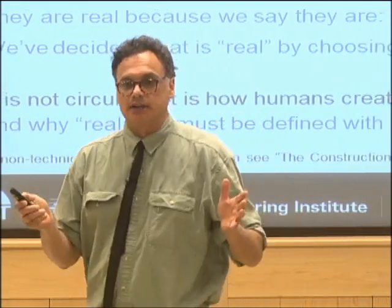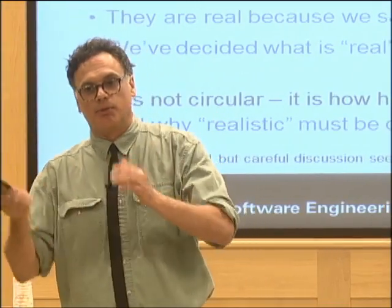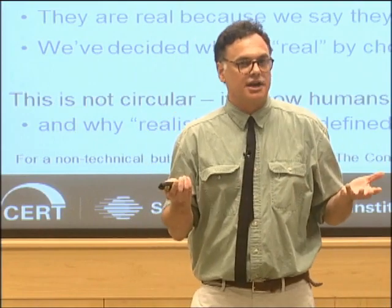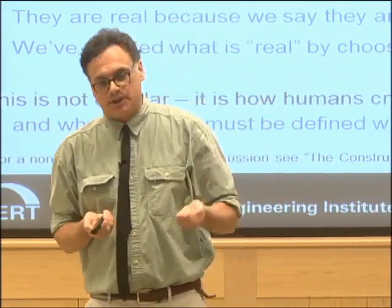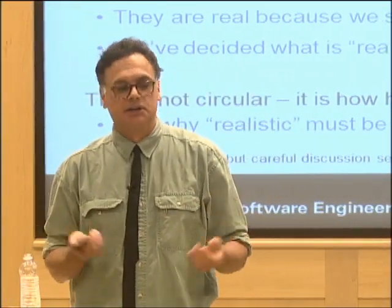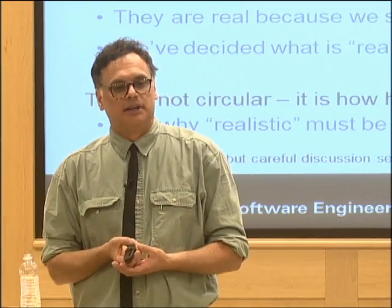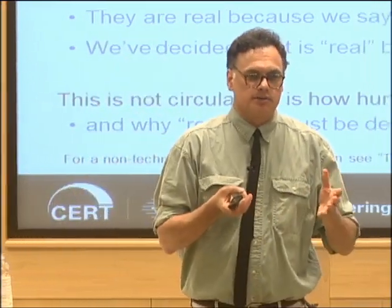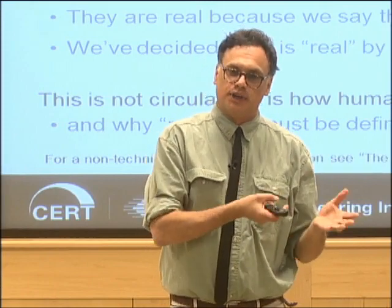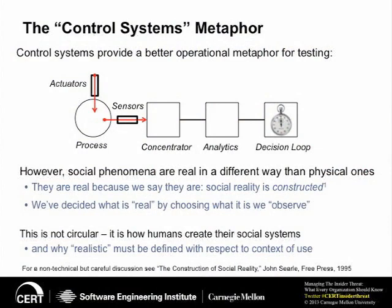But there's a complication — I think this is the most challenging point in the entire talk. When we talk about controlling a physical phenomenon, the laws of nature exist independently of us. But when we're talking about social phenomenon, they are real in a different sense: they're real because we say they are. The phenomenon we are observing and trying to manage are social constructs. They are produced because we have agreed that those are things we need to monitor and control.